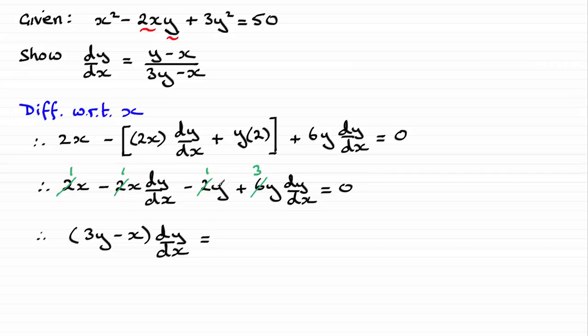And then I'm going to add y and minus x from both sides, and that's just going to leave me with y minus x. So I'm there now. If I just divide both sides by the 3y minus x, you can see I get the result that we had to show: y minus x all over 3y minus x.